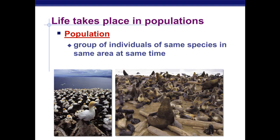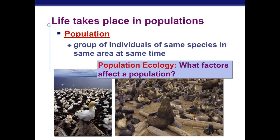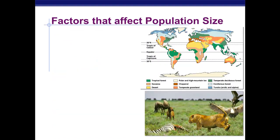A population is a group of individuals of the same species in the same area. The area can be a small area, like the San Francisco Bay, or a large area, like the state of California. When we're talking about population ecology, we want to know what factors can affect that population — what can make that population bigger or smaller. There are many non-living factors that can affect that.